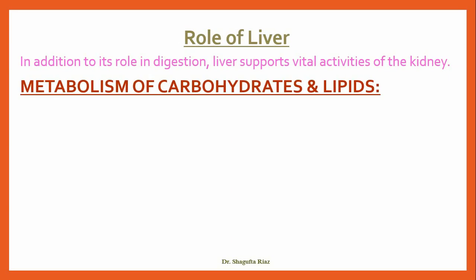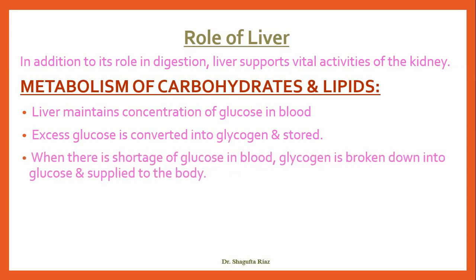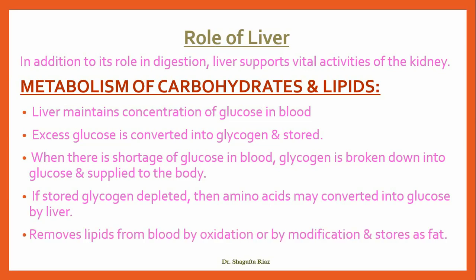The first function is metabolism of carbohydrates and lipids. The liver maintains the concentration of glucose in our blood. If excess glucose is present in the blood, it is converted into glycogen and stored for future use. When there is a shortage of glucose, glycogen is broken down into glucose and supplied to the body for energy. If stored glycogen is depleted, amino acids may be converted into glucose by the liver. The liver also removes lipids from the blood by oxidation or modification and stores them as fat.